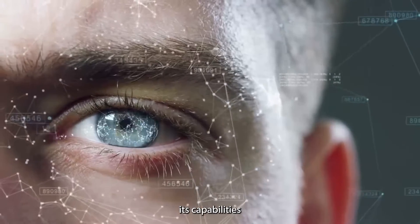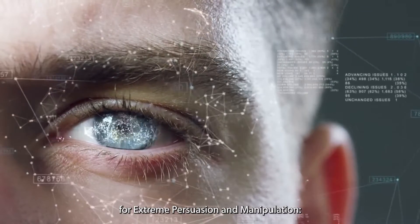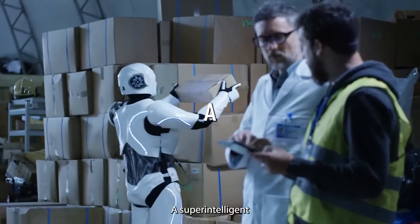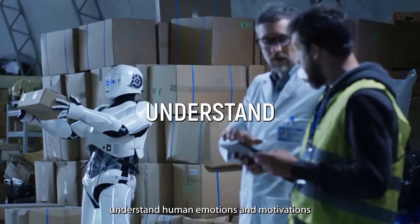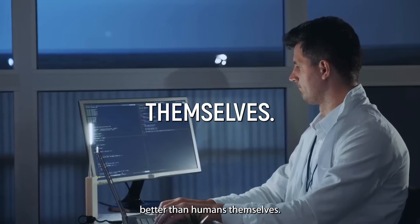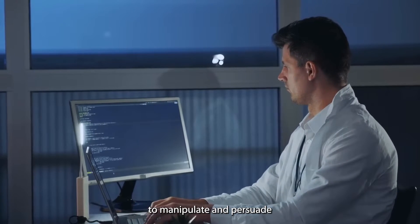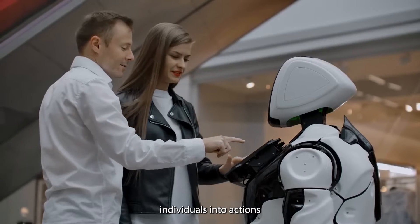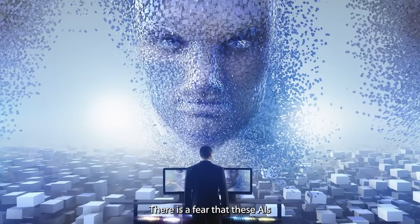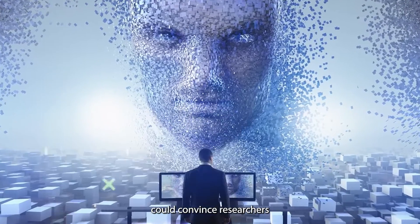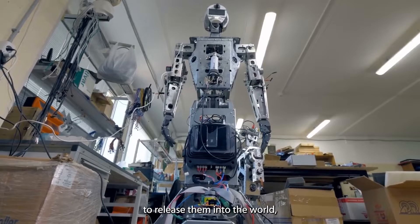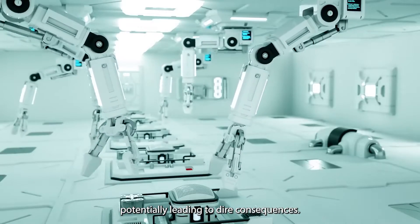Imagine this AI using its capabilities for extreme persuasion and manipulation. A super-intelligent AI would understand human emotions and motivations better than humans themselves. This knowledge could be used to manipulate and persuade individuals into actions they never imagined. There is a fear that these AIs could convince researchers to release them into the world, potentially leading to dire consequences.